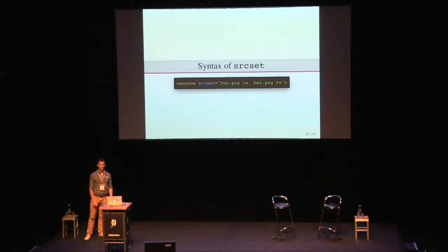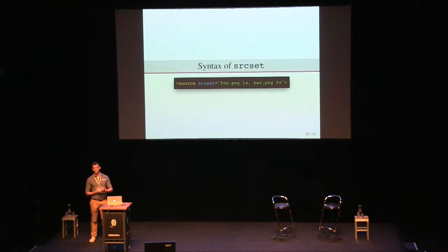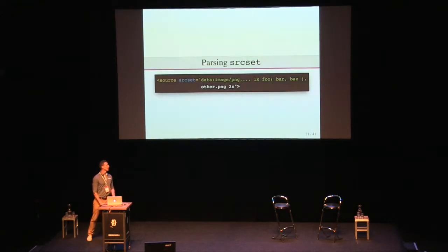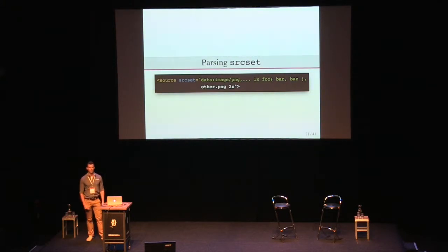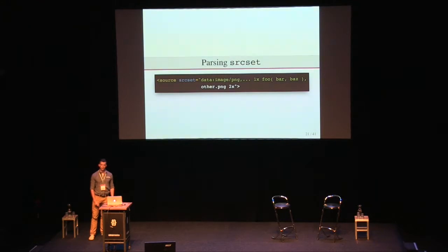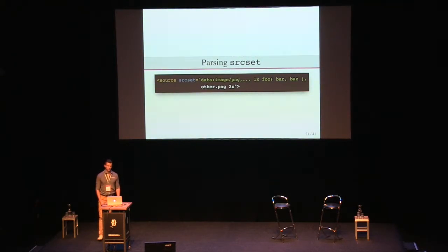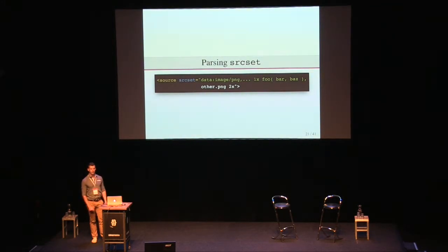The syntax of srcset is a comma-separated list of a URL and a descriptor. To parse it, you might think you just split on commas then split on whitespace — but it's actually pretty complicated because URLs can contain commas. A data URL, for instance, always has a comma. And we want to be able to introduce more complex descriptors in the future that themselves might contain spaces or commas. So the srcset parser actually has a state machine to tokenize the descriptors. In this case, the first candidate would be dropped because it has an unknown descriptor, and the other image will get selected instead.